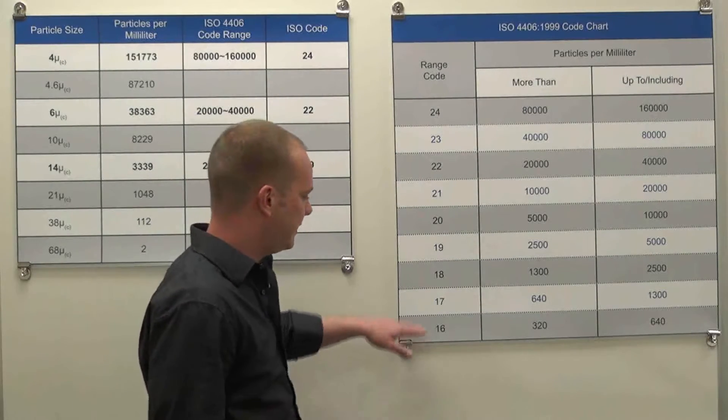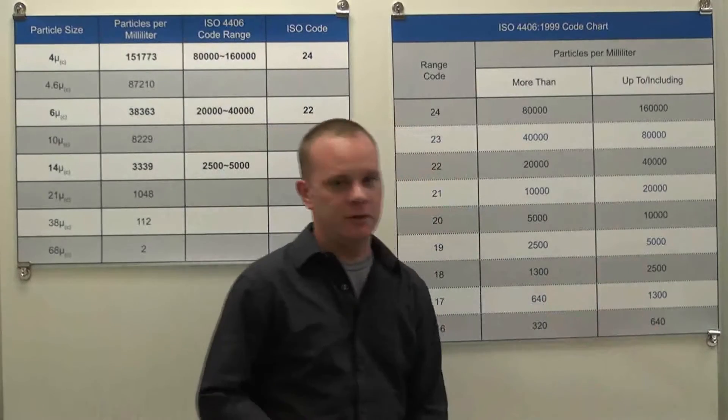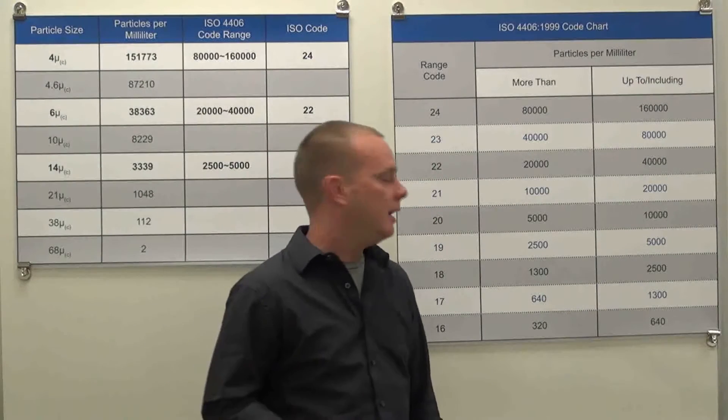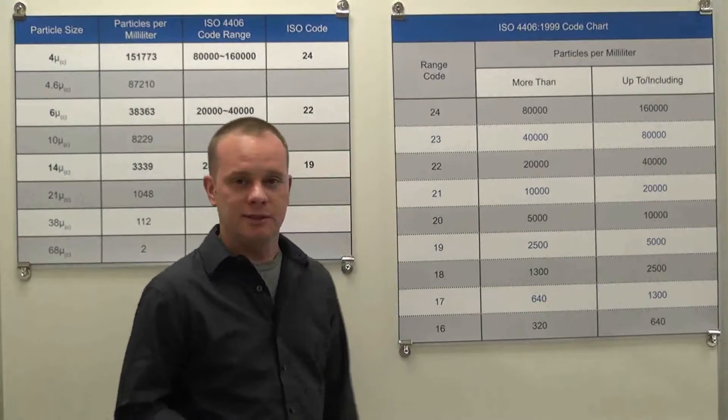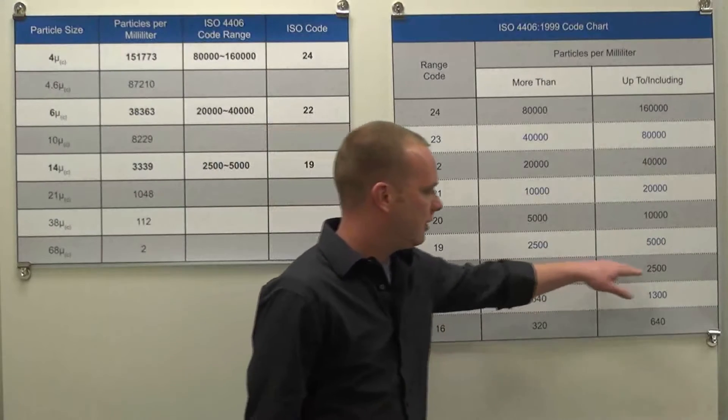As an example, if we had an ISO code of 17, then we would have between 640 and 1300 particles per milliliter of the specified micron size and larger. However, if that ISO code were to increase just one to 18, then we would have between 1300 and 2500 particles per milliliter of the specified micron size and larger.